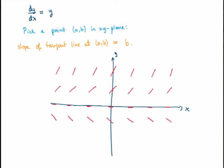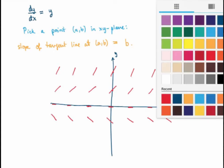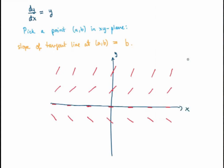What I'm drawing here is called a slope field. You can see that solutions, wherever they go, should follow these line segments, because this gives the direction of the solution by giving the orientation of the tangent lines. On the negative side, the solutions should go like this.